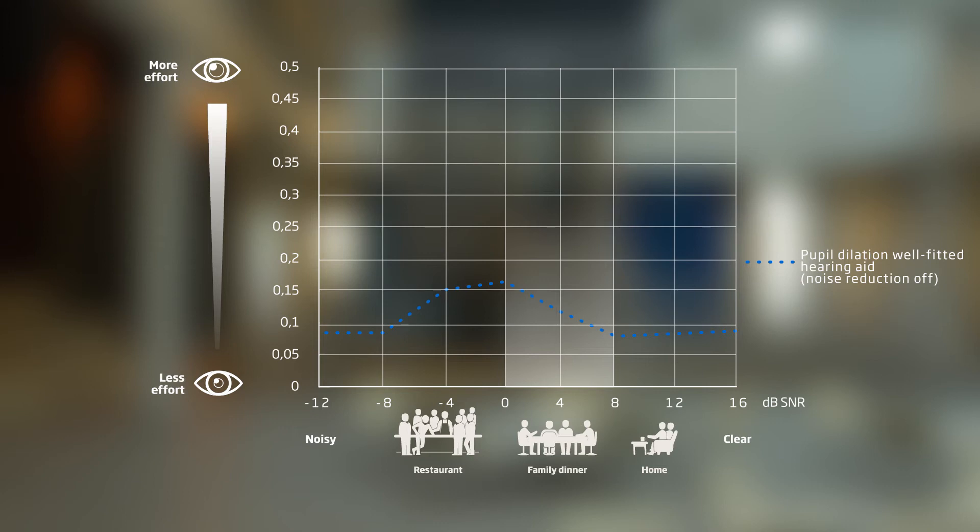So, the brain needs to put in more effort. Just below 0 dB SNR, the pupil size decreases. This is the tipping point.